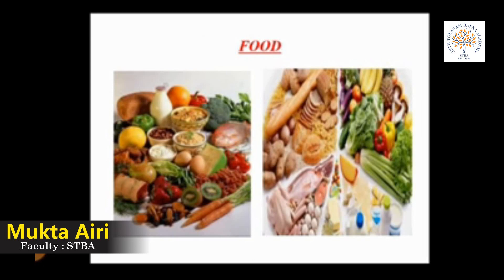These nutrients also help for growth, repair the body and keep our immune system healthy. The energy we get from food is measured in calories. For example, 1 gram of sugar has more calories than 1 gram of vegetable. To some extent, we can change our food requirement according to the calories we need. An athlete or a long distance runner needs more calories than a normal person.